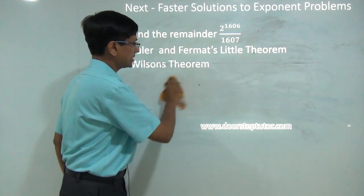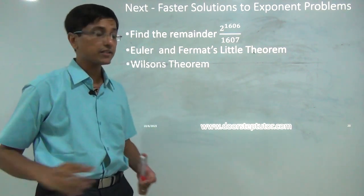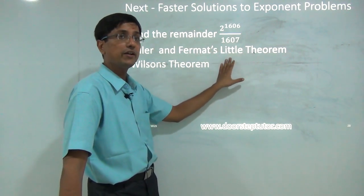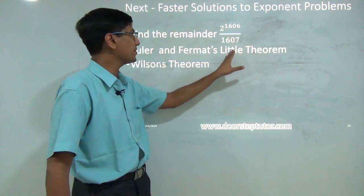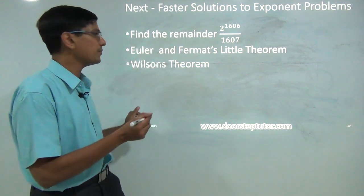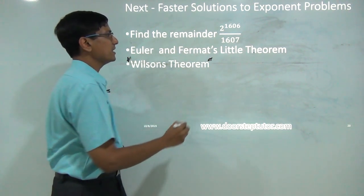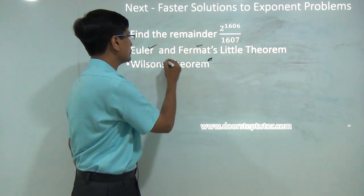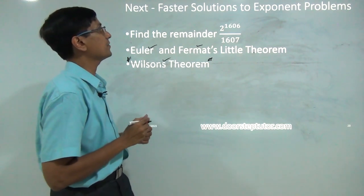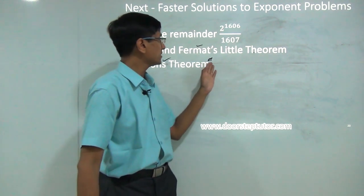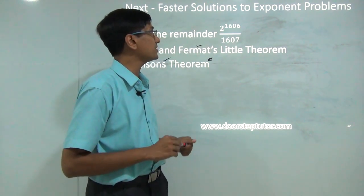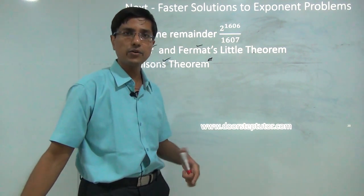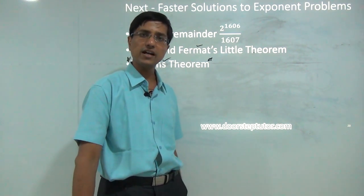With this, we end this introduction to congruences. In subsequent lectures, we will discuss Euler's theorem and Fermat's Little theorem, which are really important for aptitude problems, and then Wilson's theorem. People who use these theorems are able to solve aptitude questions very quickly. Please subscribe to Examera's channel, and if you have any questions, comments, or corrections, please add them in the comments below the video. Good luck and thank you.